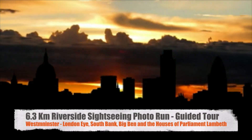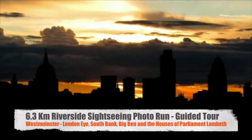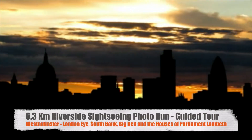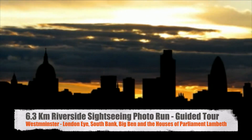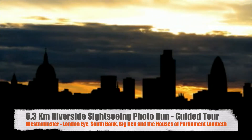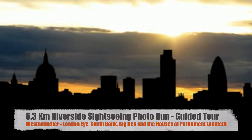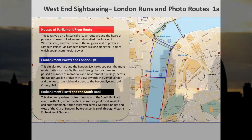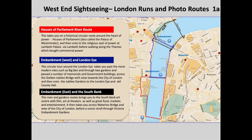Hello and welcome to this 6.3 kilometre guided tour of Westminster along the riverside. This is a combination of three of the five runs that I've done in this area, and it will look at going past the London Eye, the South Bank, the Houses of Parliament and Victoria Embankment Gardens.